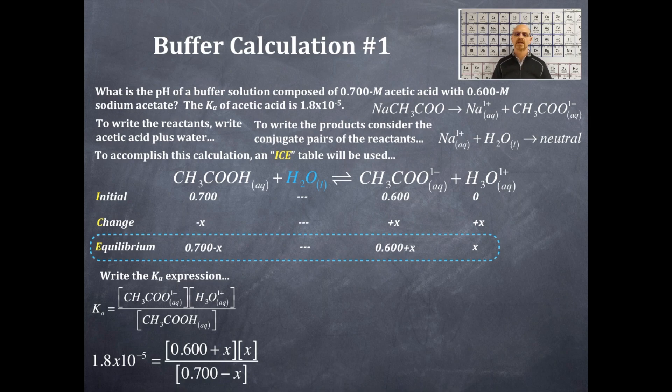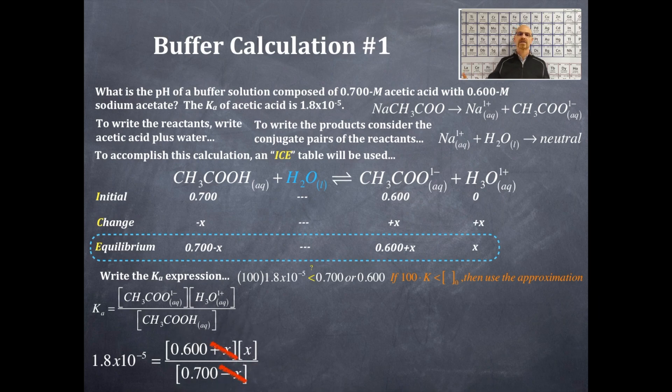Remember, with an equilibrium problem we are going to be asking ourselves this question: 100 times the Ka, is that less than the initial concentration? And if that is less than the initial concentration, then I'll be able to use the approximation. So 100 times 1.8 times 10 to the negative 5, is that less than 0.700? Yes it is, so I'm going to get rid of that minus x in the denominator. I'm going to ask the other question: 100 times 1.8 times 10 to the negative 5, is that less than 0.600 molar? If that's a yes, of course it is, then I'm going to get rid of the plus x in the numerator term. I can't get rid of the x because, of course, well that x by itself is what I'm trying to solve for. So I'm going to rearrange this equation and get rid of the minus and the plus x in the denominator and numerator respectively.